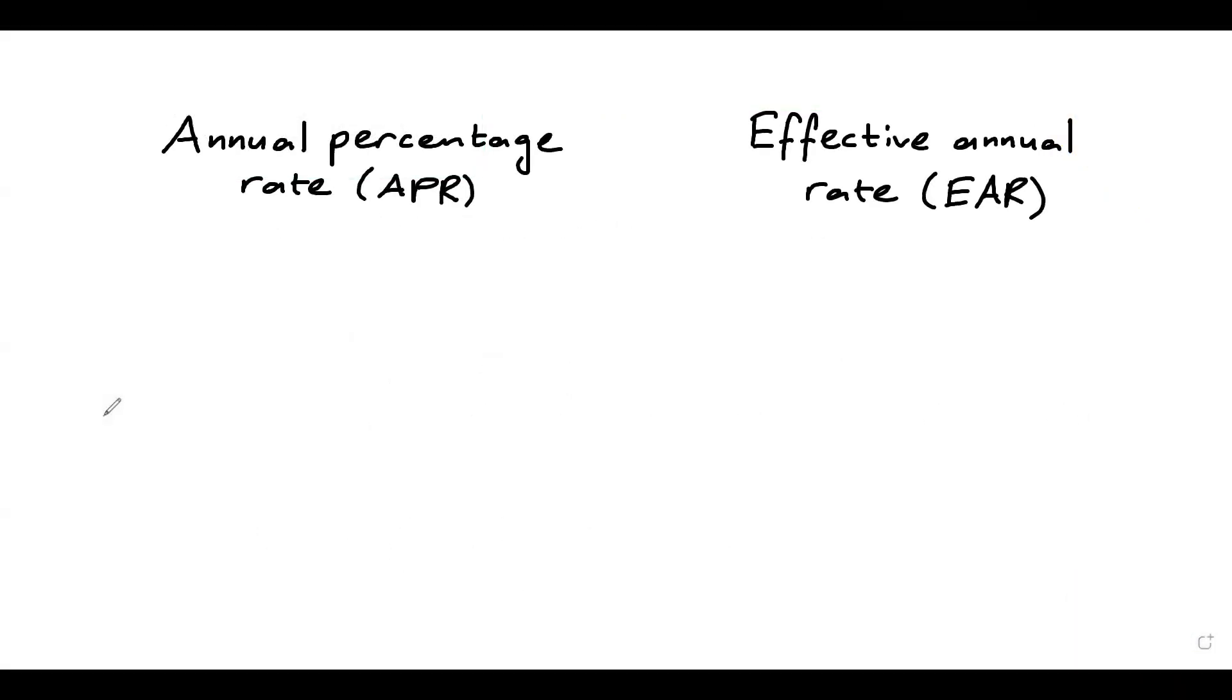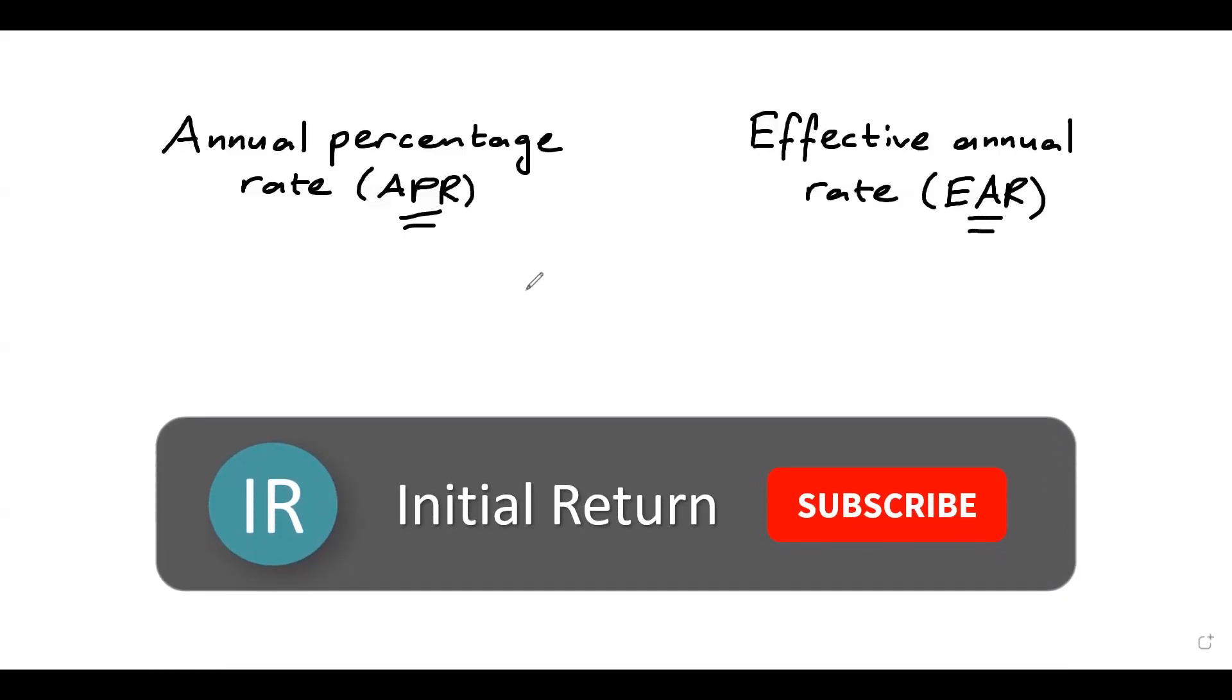Hi, in today's tutorial we'll be learning about two concepts that are commonly used in interest rate calculations. The first one is called APR, annual percentage rate, and the second one is EAR, effective annual rate.